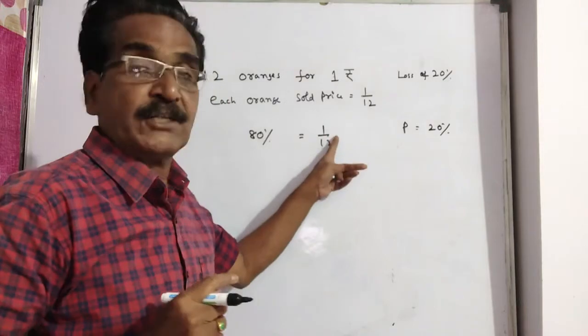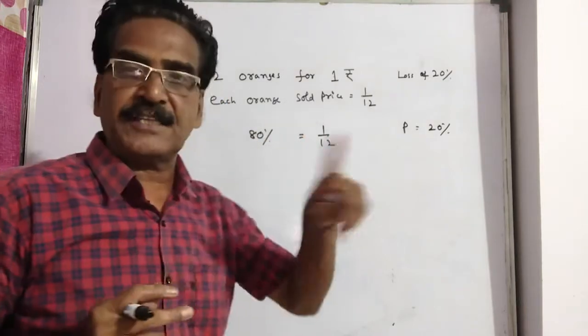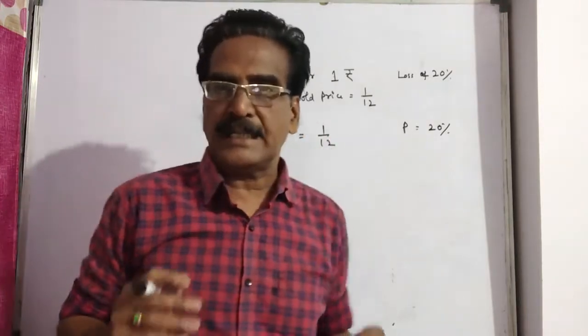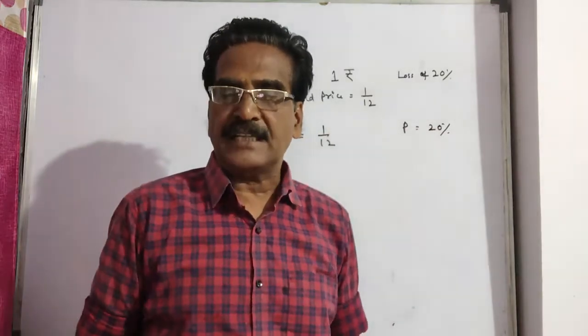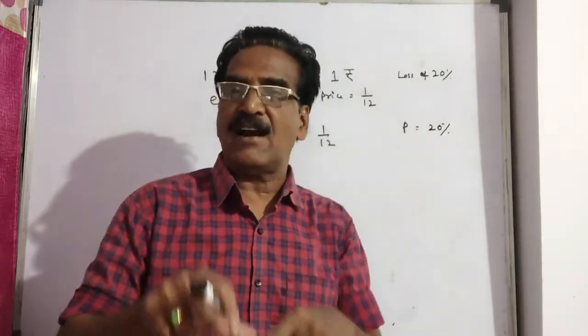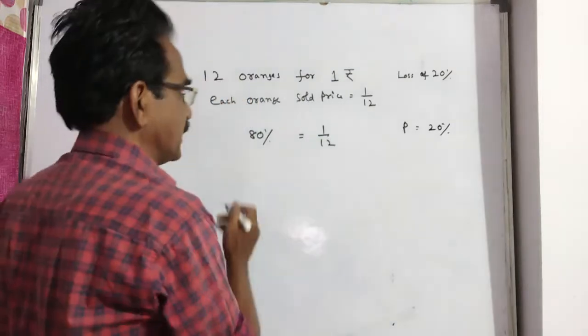This 1 by 12 is equal to 80% of the cost price. But now we want 20% profit, that means we have to sell the orange at 120% of the cost price.